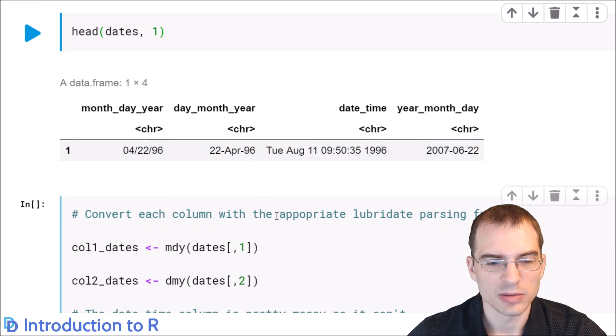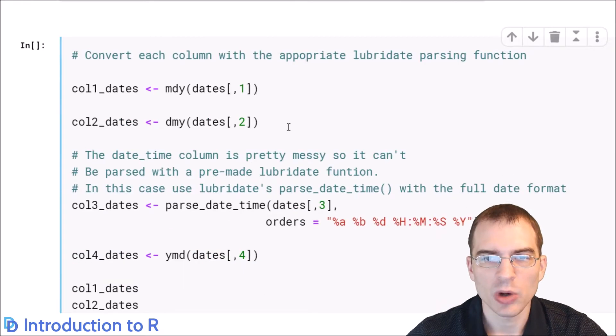One nice thing about Lubridate is it has built-in functions for converting dates in string form and parsing them into date times. Instead of having to explicitly write out those long character matching strings, you can use these functions that match certain common formats. For instance, the mdy function will convert strings in month, day, year format into dates. Similarly, the dmy function will convert things that are in day, month, year format into dates.